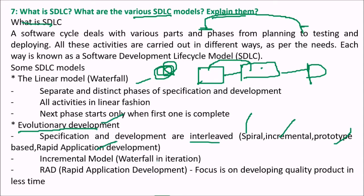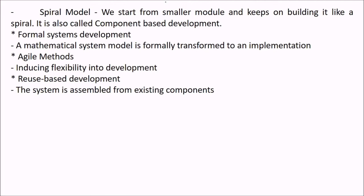The spiral model starts from a smaller model and keeps building outward like a spiral; it is also component-based development, and its main thrust is on risk analysis. Formal system development involves a mathematical system model that is formally transformed into an implementation. Agile methods introduce flexibility and agility into development. Reuse-based development assembles a system from existing components.